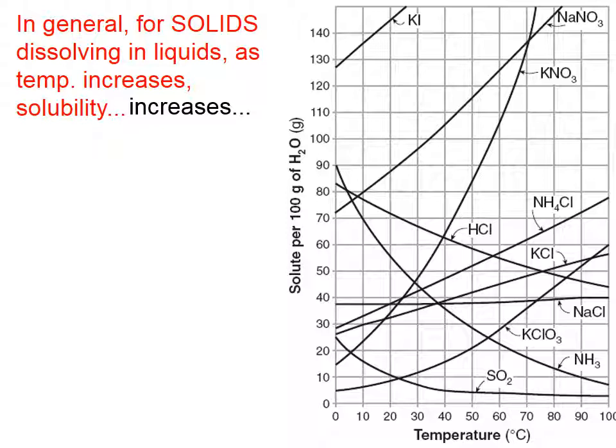We can see that in this graph, the curves that go up are for solids. This one in the upper left, potassium iodide. That is a solid at most temperatures. This next one, sodium nitrate. The one that makes a very steep increase, potassium nitrate. All are solids.